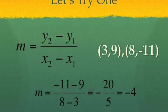So remember our equation for slope is y2 minus y1 over x2 minus x1. The points here are 3, 9, and 8, negative 11. We get negative 11 minus 9 over 8 minus 3 equals negative 20 over 5. When we reduce, we have a slope of negative 4.